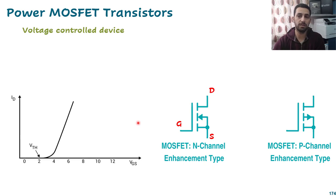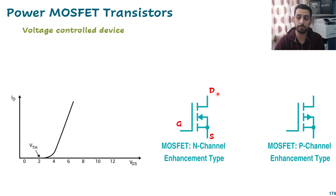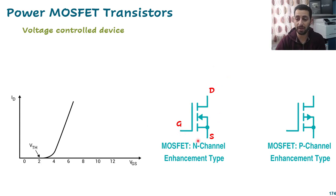The relation between VGS — the voltage between the gate and source — and the drain-source current looks like this curve. It describes the voltage applied across gate and source and its relation with the current going through the MOSFET between drain and source. This is different from the BJT transistor where we need to push current to create current between collector and emitter. Here, we apply voltage between gate and source to make current pass from drain to source.